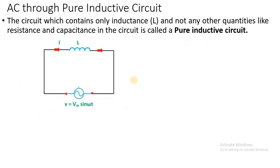The next term is AC through a pure inductive circuit. When the circuit contains only inductance L of Henry and not any other quantities like resistance and capacitance, it is called as a pure inductive circuit.